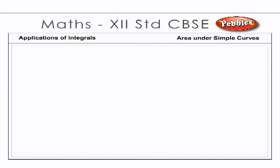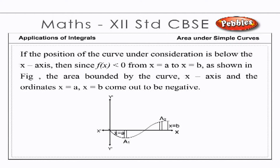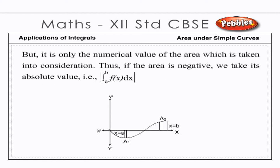Area under simple curves. If the position of the curve under consideration is below the x-axis, then since f(x) < 0 from x = a to x = b, as shown in the figure, the area bounded by the curve, x-axis and the ordinates x = a, x = b comes out to be negative. But it is only the numerical value of the area which is taken into consideration. Thus, if the area is negative, we take its absolute value, i.e., |∫ₐᵇ f(x) dx|.